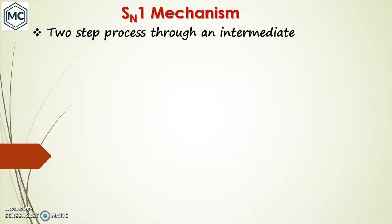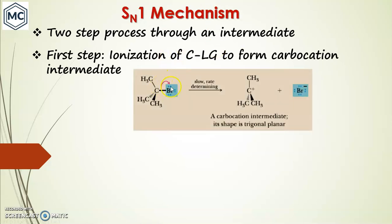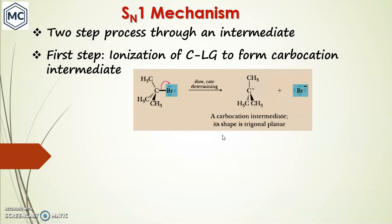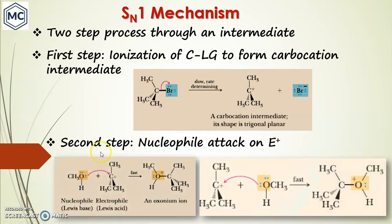The mechanism of SN1 is a two-step process involving an intermediate. In the first step, ionization of the carbon–leaving group bond forms a carbocation. This happens because the C–Br bond is polarized, and after ionization a very highly stable (tertiary) carbocation is formed — this is the reason for the slow ionization. The intermediate carbocation has a trigonal planar geometry.